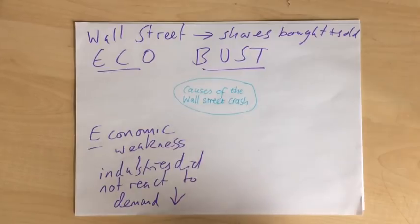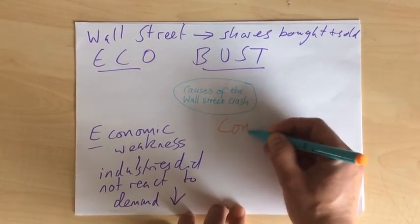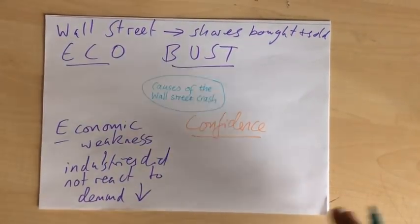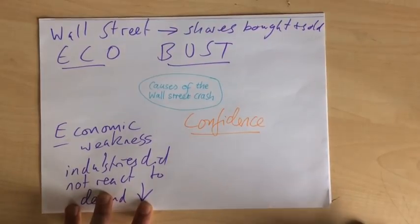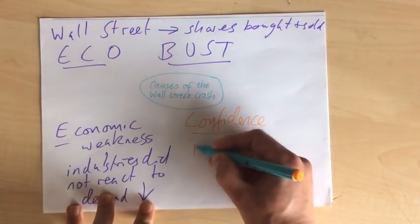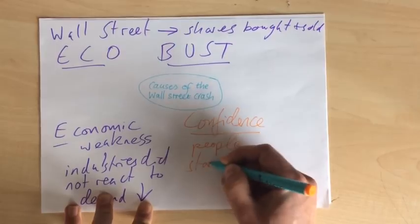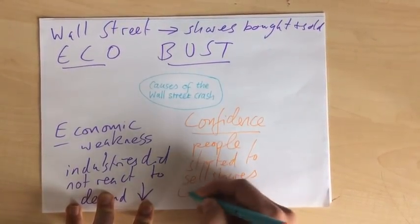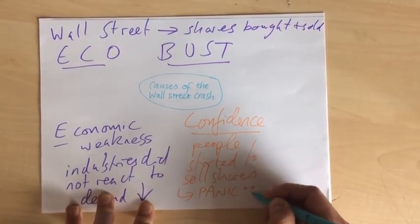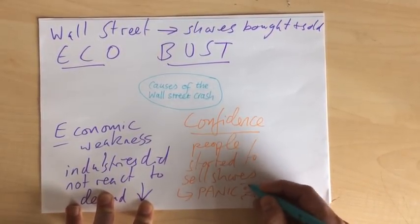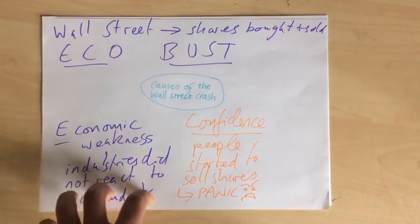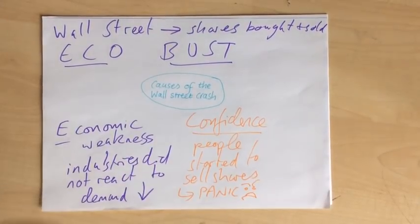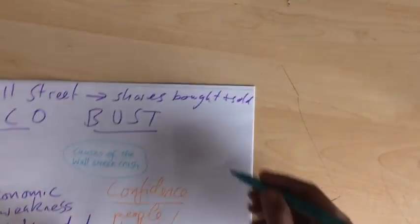The second one is C, which stands for Confidence. Confidence is essentially where once companies started to lose money, people started to try to sell their shares, and this eventually leads to a panic. He's having a panic because he wants to sell his shares because he's lost confidence in how well the US economy is going to do.